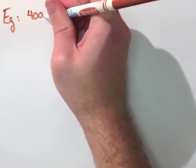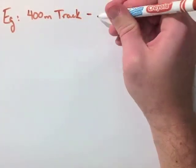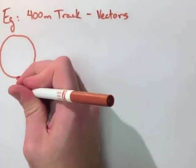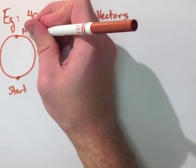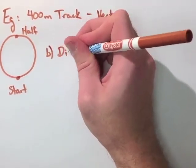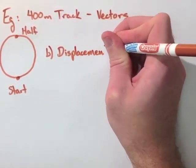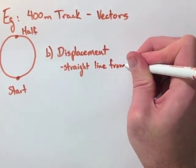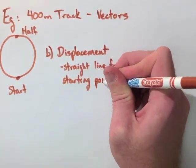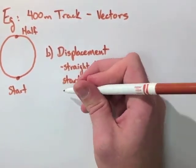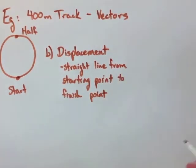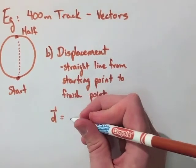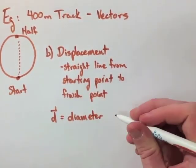Let's now look at the same example, but instead of talking with scalars, let's talk with vectors. So we have our track again. We have a starting point and an end point, which is halfway around the track. But when we're talking about displacement instead of distance, what we need to realize is we're going now in a straight line from our starting point to our finish point. So in this case, we're going to go straight across the circle. It doesn't matter how we get there. We're running around the track, but displacement is measured straight across. Here we need to find the diameter of the circle then.